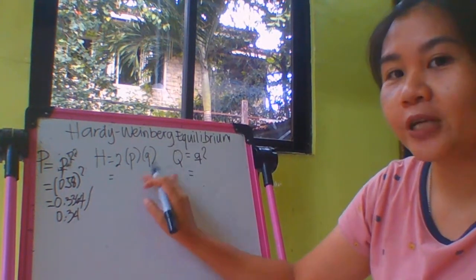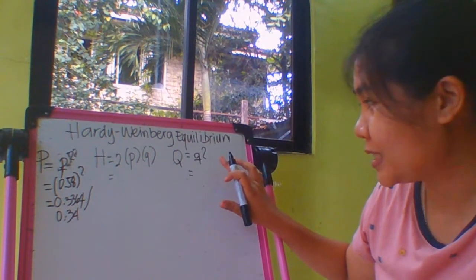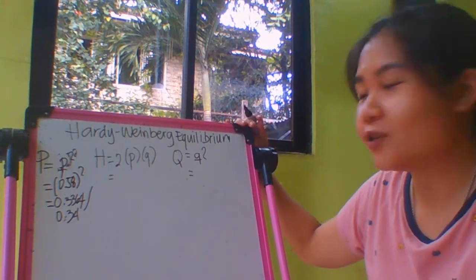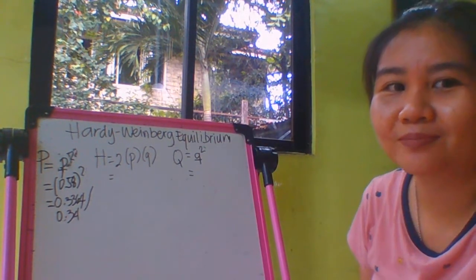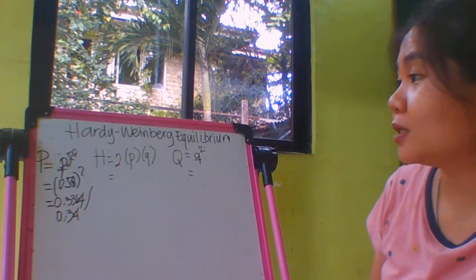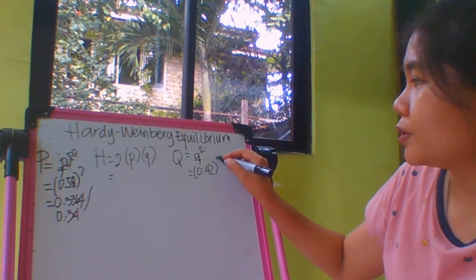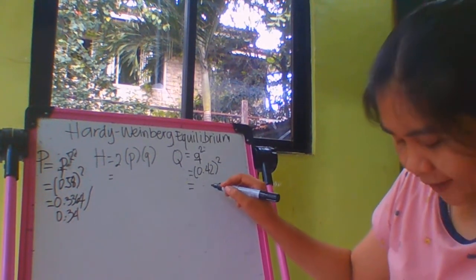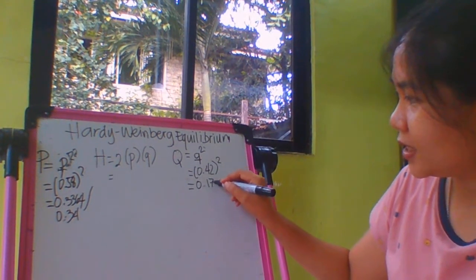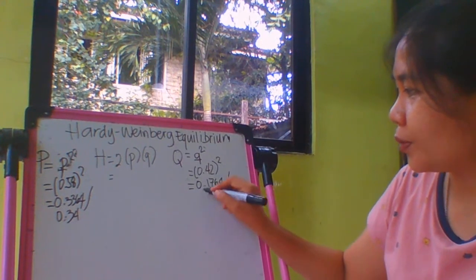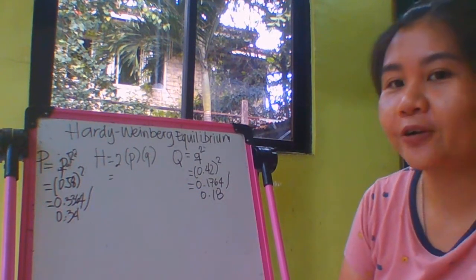Before we solve for letter H, which is for the heterozygous, we'll solve first for the recessive. Do you remember the value of q? q was 0.42. 0.42 squared, so the value for this one is 0.1764 or 0.18.